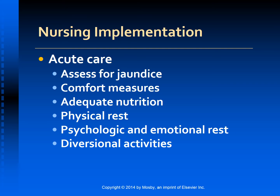Ensure that the patient receives adequate nutrition. The anorexia and distaste for food cause nutritional problems. Assess the patient's tolerance of specific foods and eating patterns. Small frequent meals may be preferable to three large ones and may help prevent nausea. Often, anorexia is not as severe in the morning, so it may be easier to eat a good breakfast than a large dinner. Measures to stimulate appetite such as mouth care, antiemetics, and attractively served meals in pleasant surroundings may help. Drinking carbonated beverages and avoiding very hot or very cold foods may also help decrease anorexia.